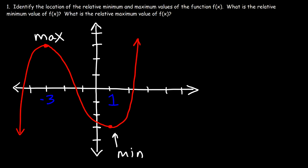Now the actual relative maximum value is the y value that corresponds to this point. So the y value is positive 3, and here the y value is negative 3.